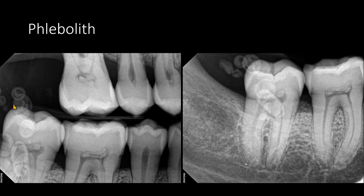These radiopacities are not osteoma cutis — these are phleboliths, calcifications in old thrombus or veins. These have the shape of a bull's eye, and this is probably a good example: an outer radiopaque ring with a central core of radiopacity. It should not be difficult to differentiate an osteoma cutis from a phlebolith, both radiographically as well as clinically.